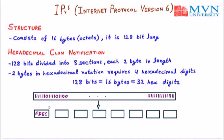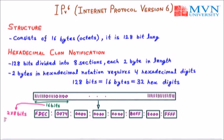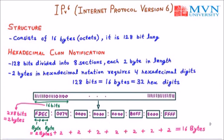My first block stands for FDEC, in which FD is the first byte and EC is the second byte — a combination of 2 bytes. Then we have 0074, followed by groups of zeros. Then B0FF, and all ones — 16 bits of 1 — can be represented as FFFF. The first block is 16 bits, equivalent to 2 bytes. So FDEC: the first 2 digits FD are 1 byte and EC is 1 byte, giving a combination of 2 bytes. All blocks are of 2 bytes, so our IPv6 address is 16 bytes total, and each block is 16 bits.